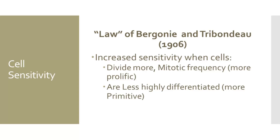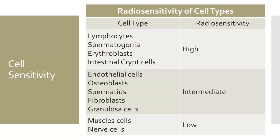The reason 'law' is in quotation marks is because there are some exceptions to what Bergonié and Tribondeau proposed over a century ago. While most of what they stated has stood the test of time, we have to discuss the exceptions. One example is the female gamete, or oocyte. The egg cell does not reproduce, and yet it is very radiosensitive. Blast cells or stem cells are radiosensitive and fall into the rules outlined by Bergonié and Tribondeau. A developing embryo also abides by the rules — it is rapidly dividing and the cells are undifferentiated or primitive. An embryo is about ten times more sensitive to radiation than an adult.